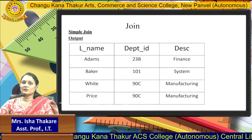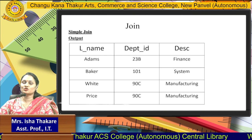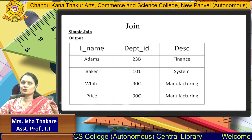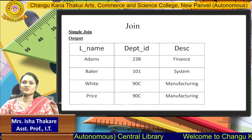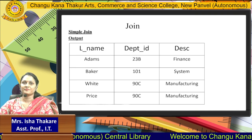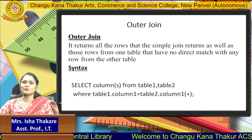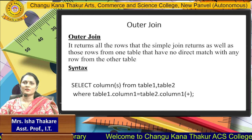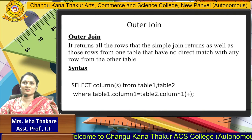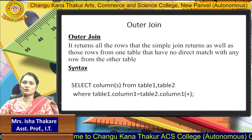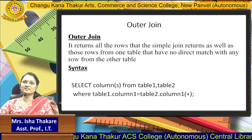We can see the output — all the fields have been joined. Simple join is generally used when there are a common number of rows in both the tables.